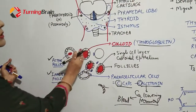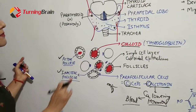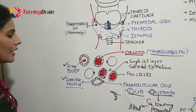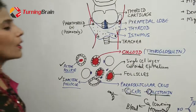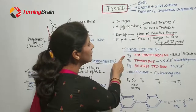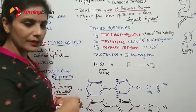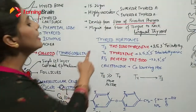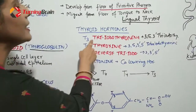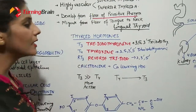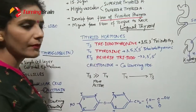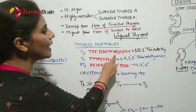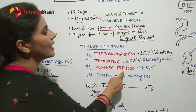So in the thyroid gland, the thyroid hormones are formed in the follicles. Calcitonin is formed from the C cells. The hormones secreted from the thyroid gland are T3, T4, reverse T3 (RT3), and calcitonin. Calcitonin is the calcium-lowering hormone secreted by C cells or parafollicular cells.